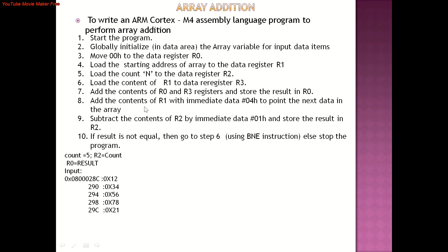Once the addition is performed, decrement the count register by 1. Then check the zero flag using the Branch Not Equal instruction. This checks whether the zero flag is set. If it is not zero, repeat the loop from step six. Otherwise, terminate the program. Finally, the sum will be stored in R0.